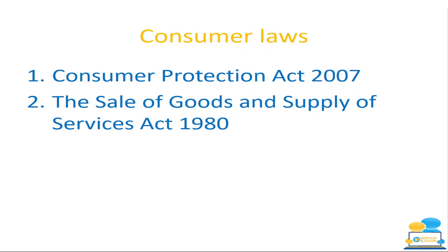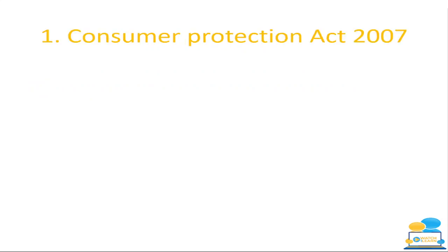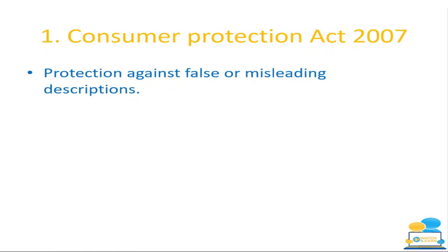If you just say Consumer Protection Act, you'll get one mark. If you say Consumer Protection Act 2007, you'll get your full two marks. The mark scheme varies every year, but based on 2022, anyone who said Sale of Goods and Supply of Services Act 1980 got full two marks. Anyone who just said Sale of Goods and Supply of Services got one mark. Even if you had 1989 instead of 1980, it's still only one mark. You do have to know and be aware of the numbers.